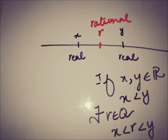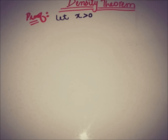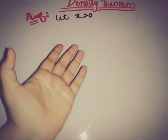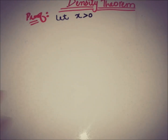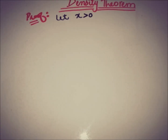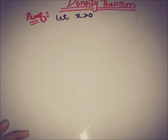Let's start the proof. We assume that x is a positive number and we are looking for two positive real numbers between which there is a rational number. This is general because if x is negative, we can make it positive by multiplying by a negative sign. So we assume x is positive and will continue the proof.